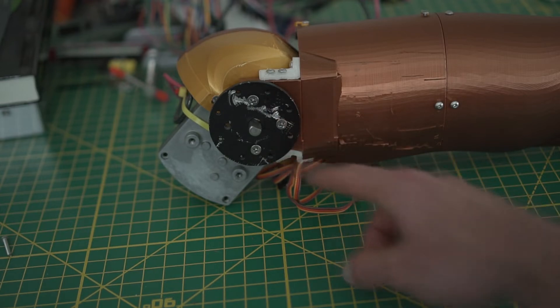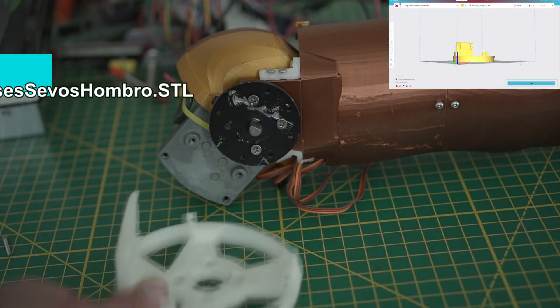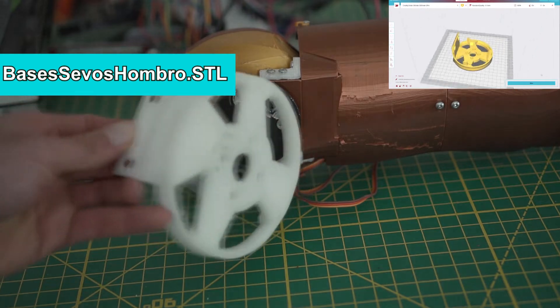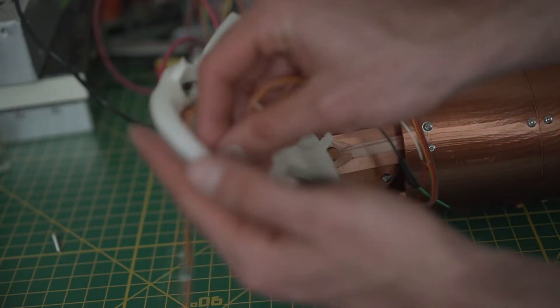We are only going to need three. And it's time to print this piece. They have to be printed using nylon. Pass all the servo wires through one of the holes of this piece.